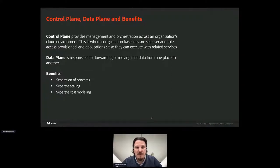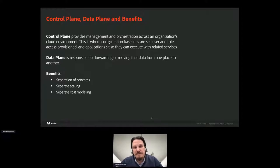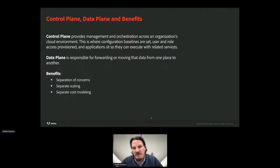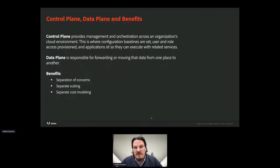In our use case, data goes to the data plane and metadata and settings go to the control plane. There are multiple benefits of having two planes. First is separation of concerns — customer data is kept clean and unpolluted by our internal metadata. Second is separate scaling: we have different infrastructure for the data plane, which is hundreds of times more demanding than the control plane, and each can be scaled differently. Third is separate cost modeling, allowing us to properly calculate costs for customers' data processing.